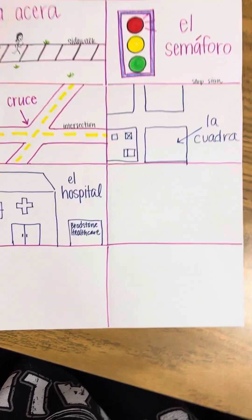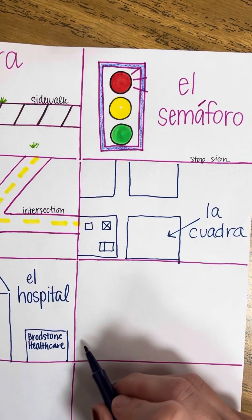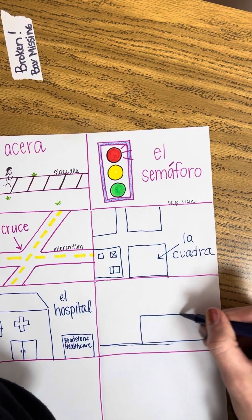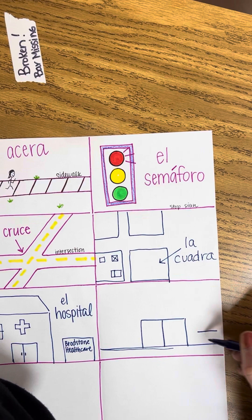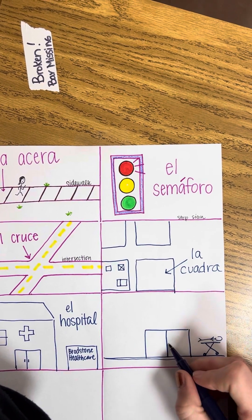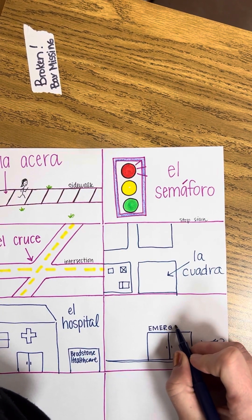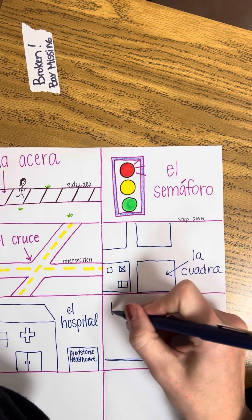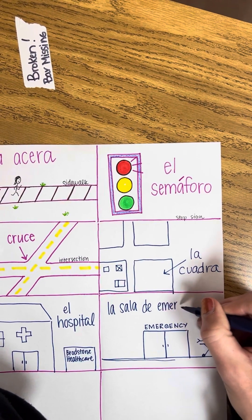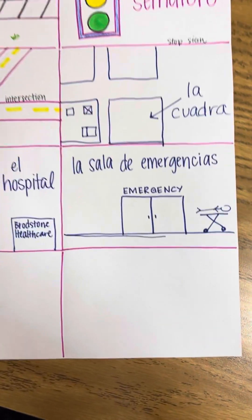Then we're going to have the living room of emergencies. How do we say the word living room? La sala. We're going to have big entry doors with a stretcher with some wheels. Maybe a person is sadly going into the emergency room. The word is la sala de emergencias. La sala de emergencias.